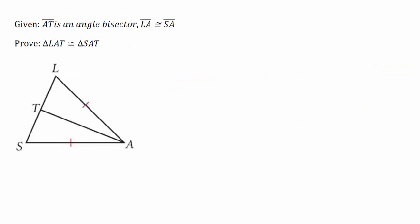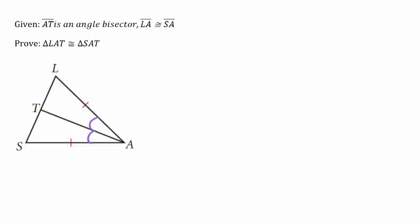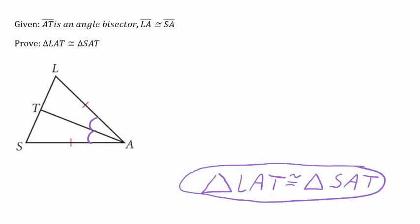The given information works out a little differently for this one. We are told something about line segment AT — we are told that it is an angle bisector. So line segment AT bisects angle A. This is important because that means that angle LAT is congruent to angle SAT. We are trying to prove that the two smaller triangles are congruent to each other. So far we know there is one pair of congruent sides, one pair of congruent angles, and we need one more pair of congruent parts. We notice that the two triangles share a side, so that shared side is the third piece of congruent parts.